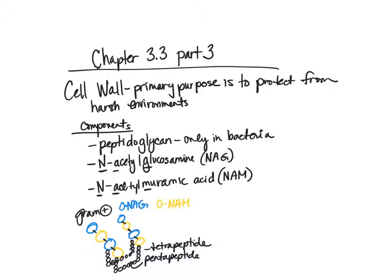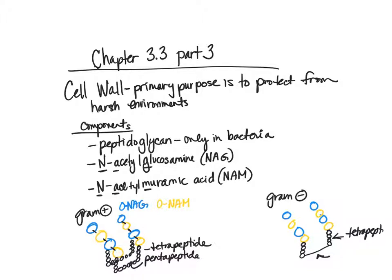Both gram positive and gram negative have NAG and NAM, but in gram negative organisms the connection is different — instead of pentapeptide bridges, there is a direct link between the tetrapeptides. So it's just how they're connected to each other that differs between gram positive and gram negative.